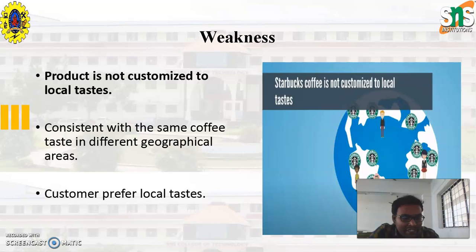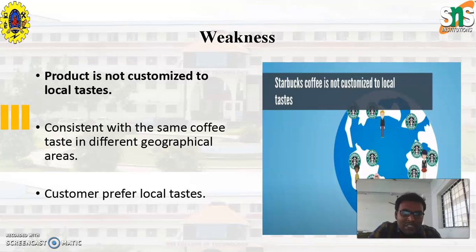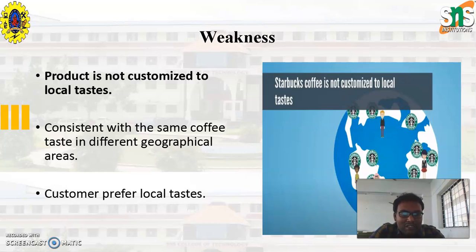Next, we are going to discuss about some of the weaknesses, which is the second point in the SWOT analysis. One of the major drawbacks for Starbucks is that its product is not customizable to local taste. Although Starbucks has thousands of outlets in the world, it serves the same coffee across all geographical areas regardless of local customer preferences. Many customers prefer local taste and therefore do not prefer Starbucks. This is one of the major weaknesses.